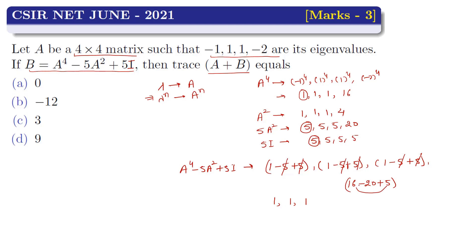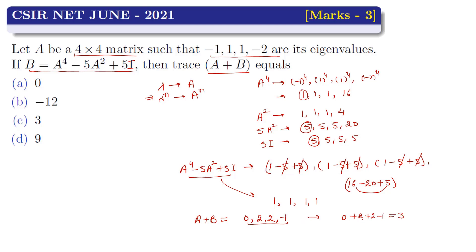The trace of A equals the sum of its eigenvalues: -1 + 1 + 1 + (-2) = -1. The trace of B equals the sum of its eigenvalues: 1 + 1 + 1 + 1 = 4. Therefore trace(A + B) = trace(A) + trace(B) = -1 + 4 = 3. So option C is correct, and options A, B, D are wrong.